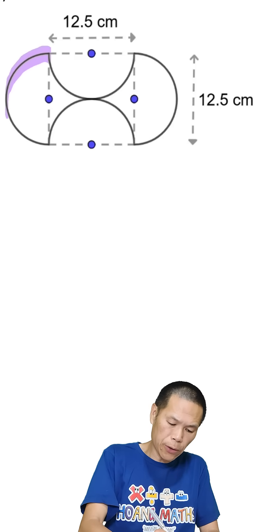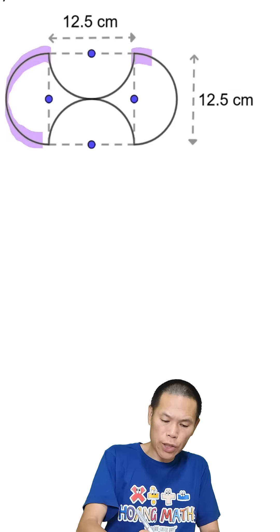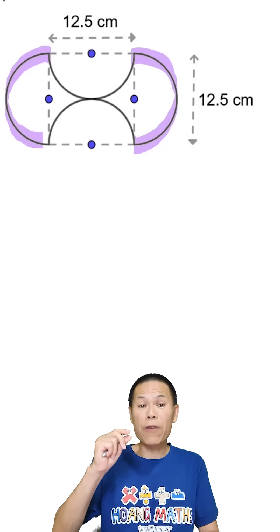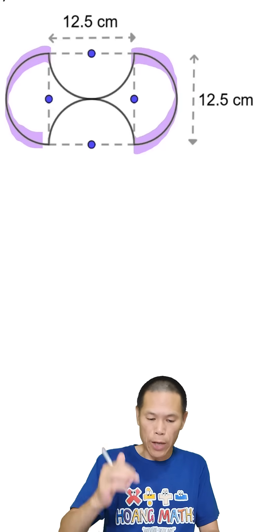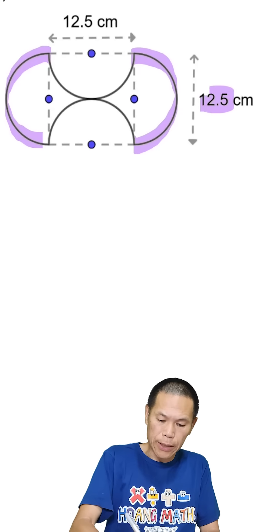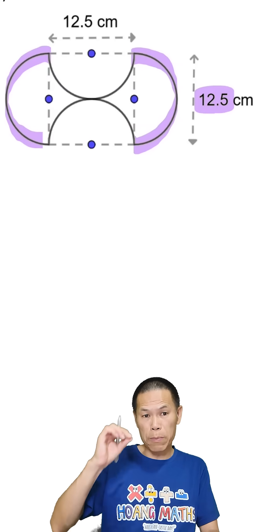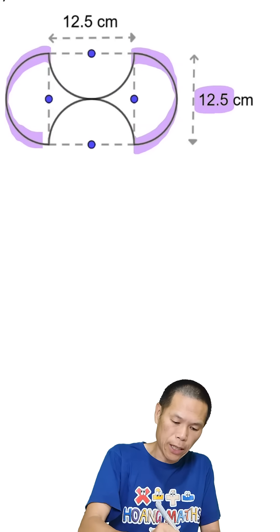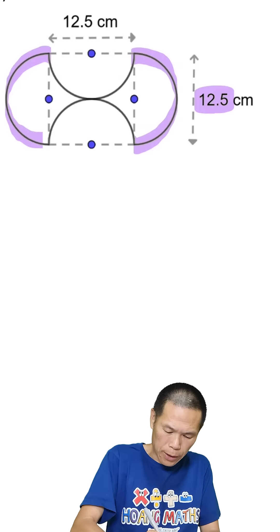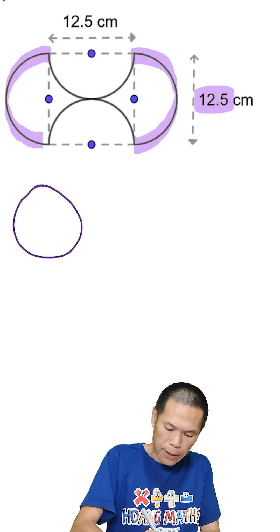This half circle combined with this half circle will give us one full circle, and the diameter is 12.5. So let me just draw it out for you. We have this circle here, the diameter is 12.5.